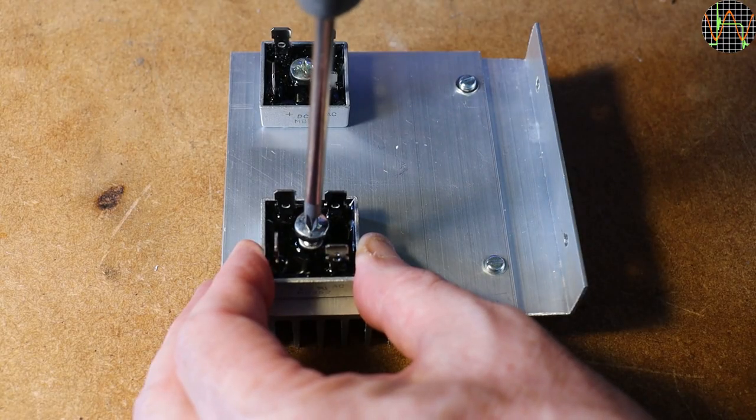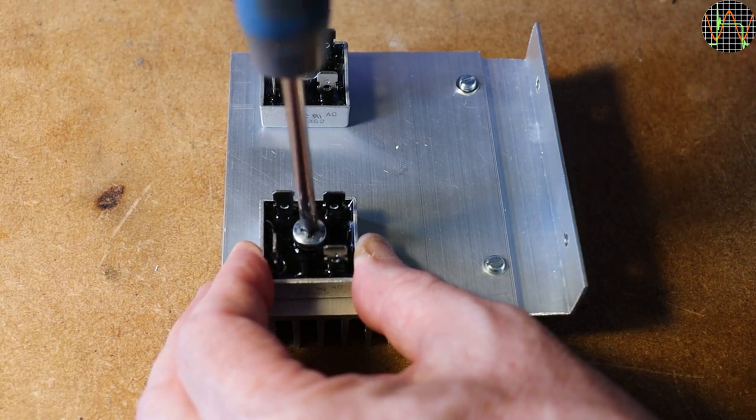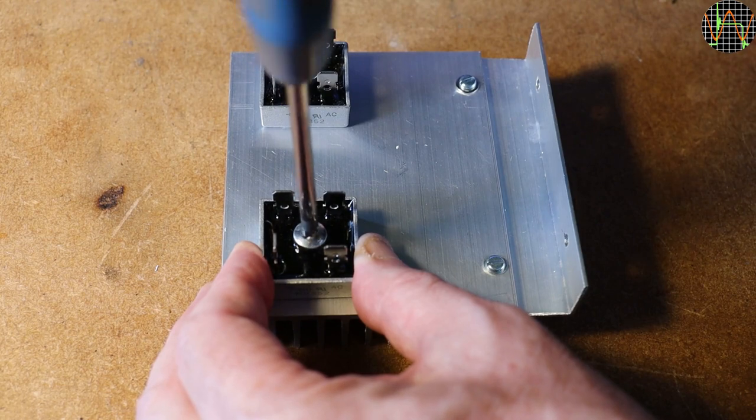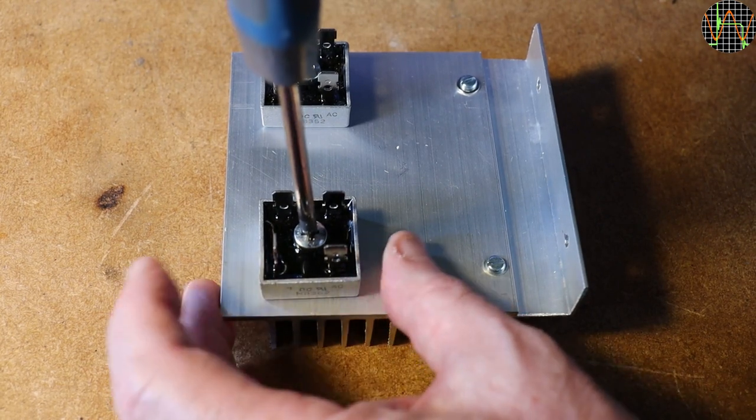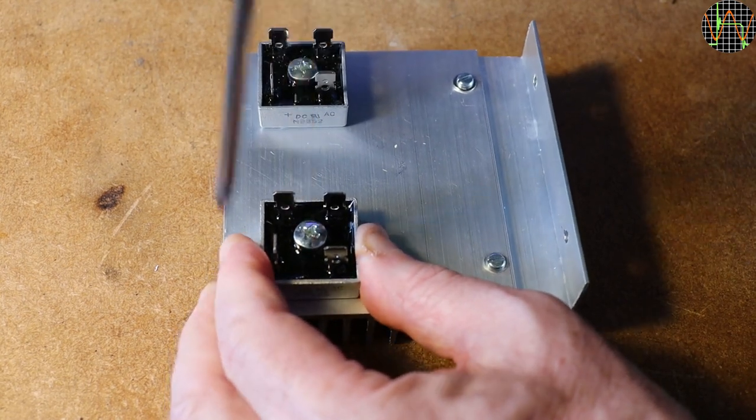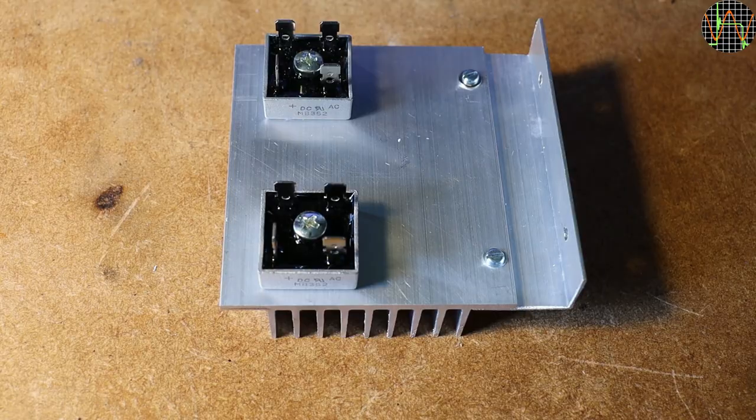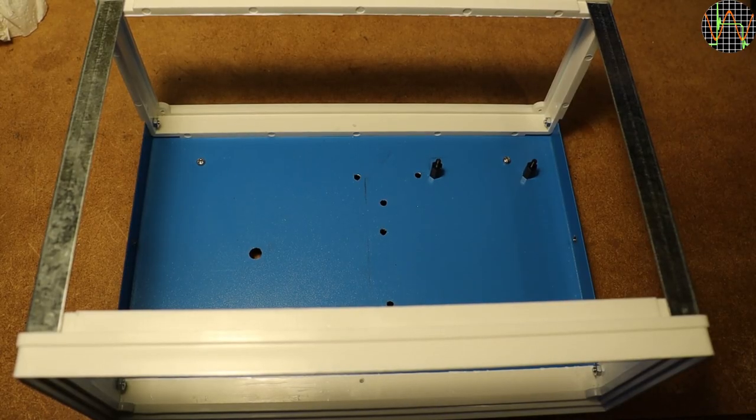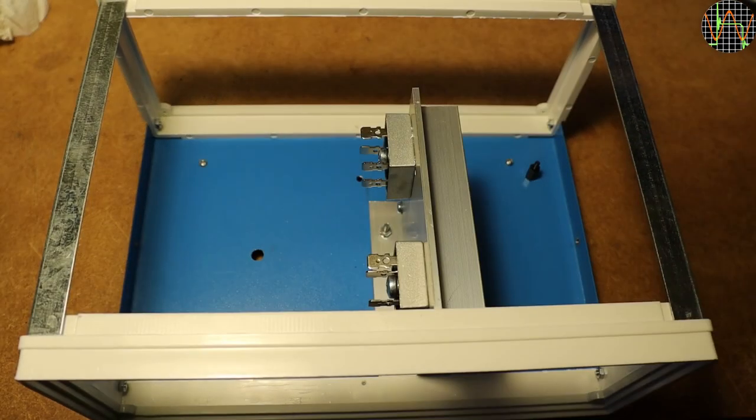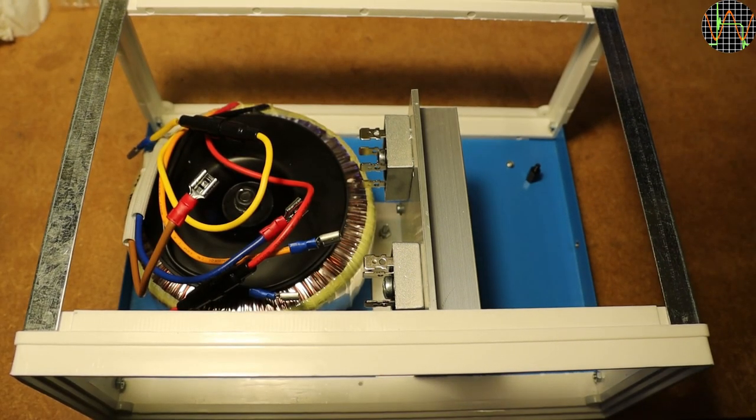I prepared a heatsink for the two rectifiers by drilling two holes and cutting M5 threads into them. With a thin layer of thermal paste, both of the rectifiers will go on this common heatsink. This works because the metal housing of the rectifiers are isolated from the diodes inside. Time to put the items that go into the center of the housing together, starting with the rectifier, the transformer and the amp.